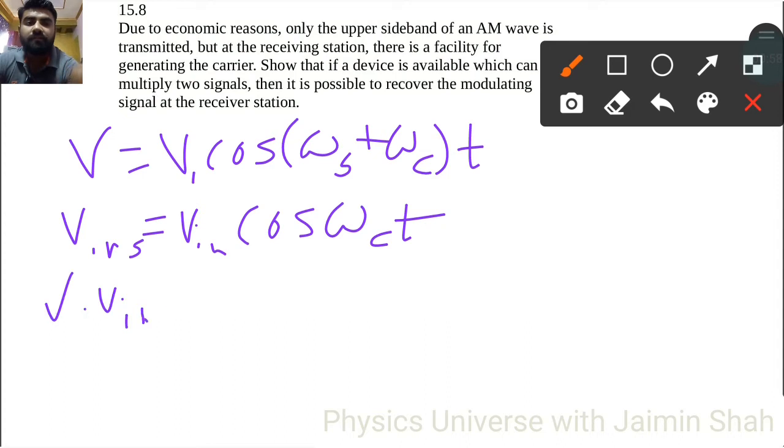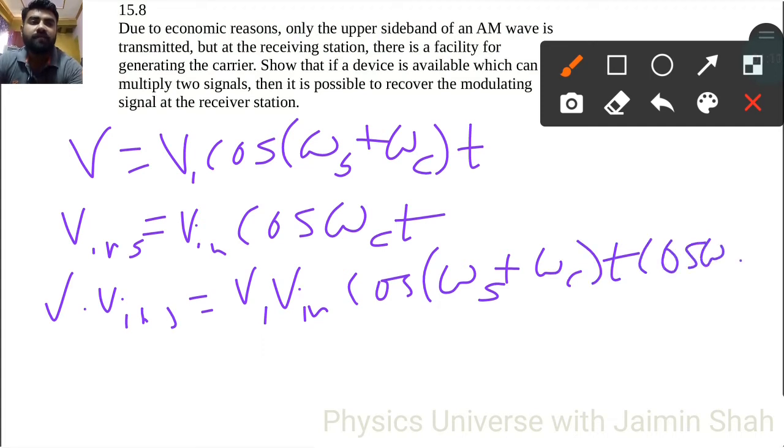So V into V_in instantaneous is equal to V₁ into V_in cos(ωₛ + ωc)t cos(ωc)t. Now multiply by 2, divide by 2, so this is equal to (V₁V_in/2) times 2cos·cos. So that is 2cos·cos, which means cos summation.